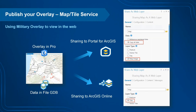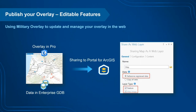Once you've created your overlay in ArcGIS Pro, you can share it with others. You can publish as a map or tile service for web viewing. If sharing via Portal for ArcGIS, share as a map image service; for ArcGIS Online, share as a tile service. The most impactful workflow is using the military overlay template to share your overlay as editable features hosted in an enterprise geodatabase, enabling others to edit and update features as the situation changes. You'll need enterprise data and share your web layer as both a feature service and map image service.